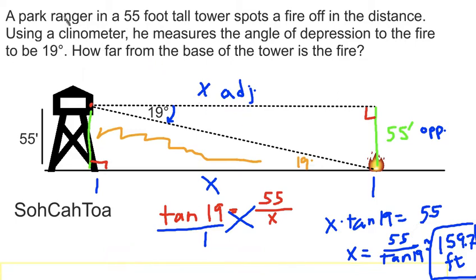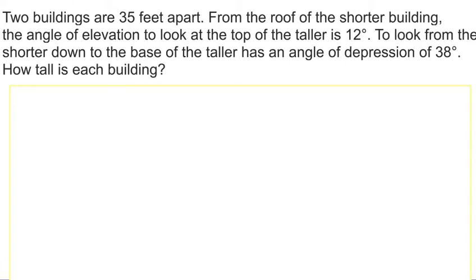Let's look at a little more challenging problem, also involving measurements in a clinometer. Two buildings are located 35 feet apart. From the roof of the shorter building, the angle of elevation to look at the top of the taller is 12 degrees. To look from the shorter down to the base of the taller has an angle of depression of 38 degrees. How tall is each building?